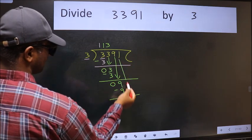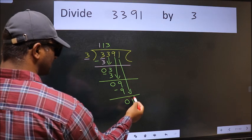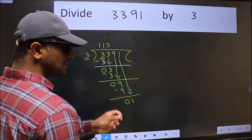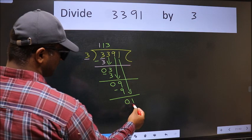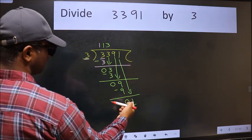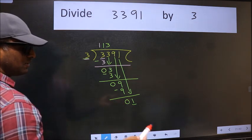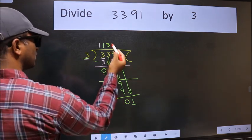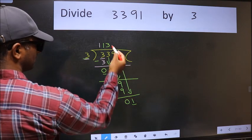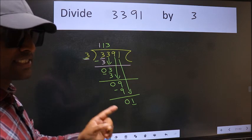After this, bring down the beside number. So 1 down. After this step, the mistake happens. And the mistake is this. Here we have 1 and here 3. 1 is smaller than 3. So what many do is they directly put dot, take 0, which is wrong. Why is it wrong?